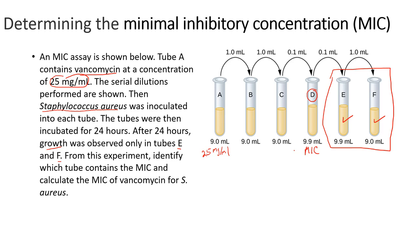In order to calculate that, we need to determine what the total dilution factor is from tube A to tube D. For that, we use the formula: the dilution factor is equivalent to the volume transferred over the total volume.